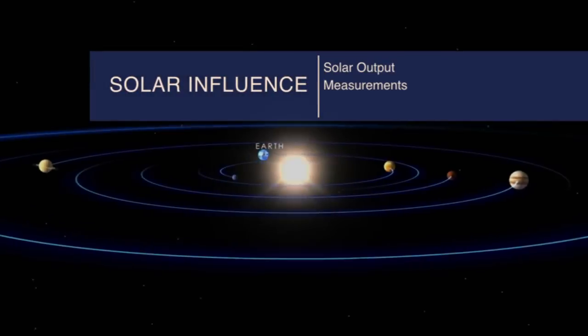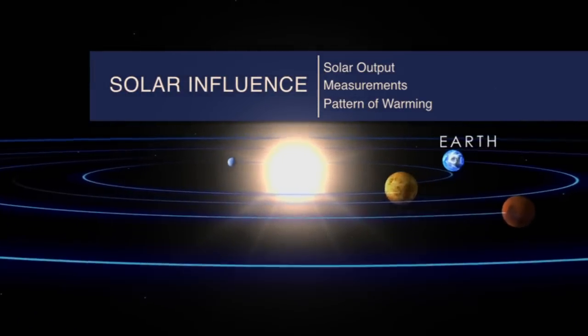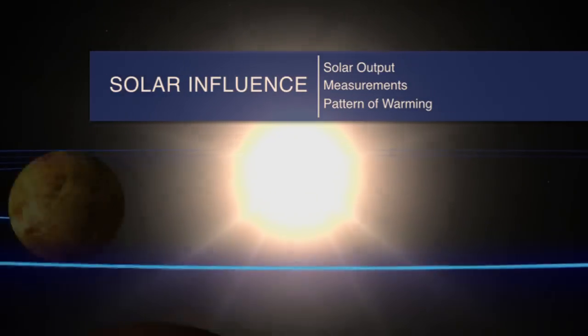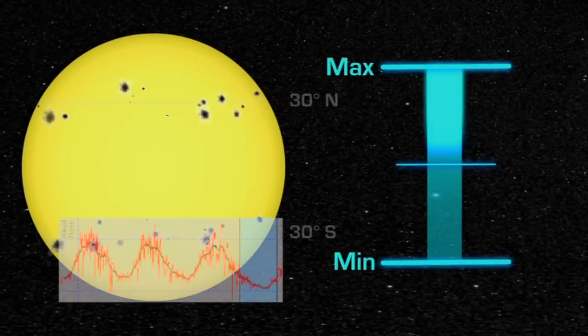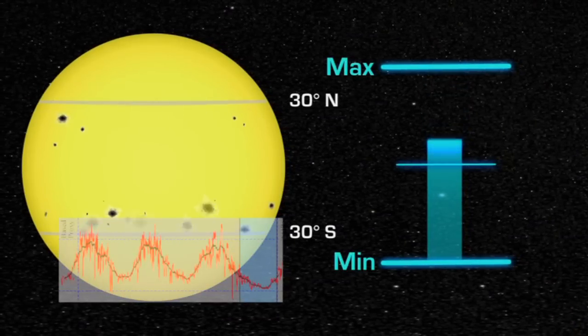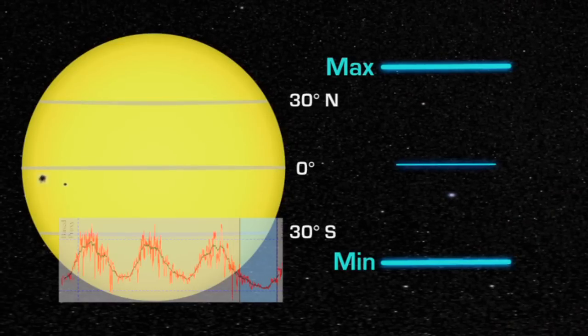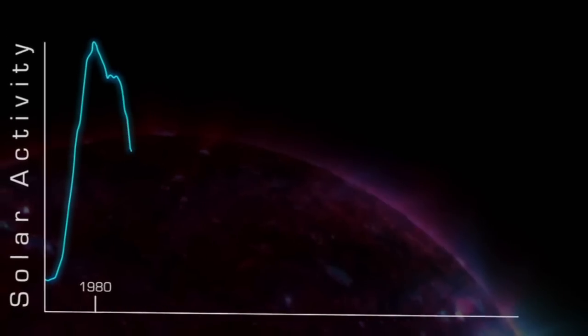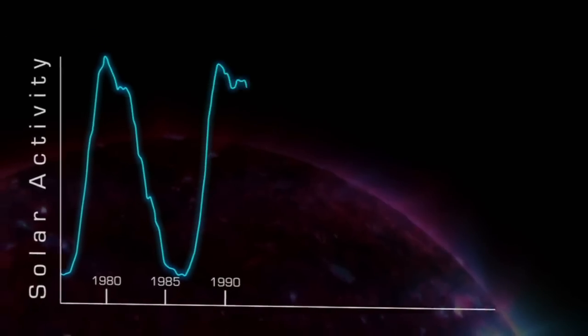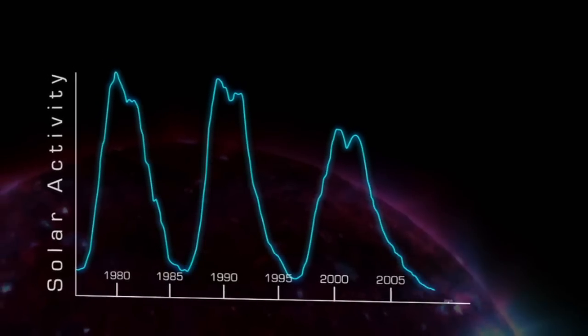How do we know the current warming trend isn't caused by the Sun? Because the Sun's output has a strong influence on Earth's temperature, scientists have examined records of solar activity to determine if changes in solar output might be responsible for the observed global warming trend. The most direct measurements of solar output are satellite readings, available since 1979. These satellite records show that the Sun's output has not shown a net increase during the past 30 years, and thus cannot be responsible for the global warming during that period.